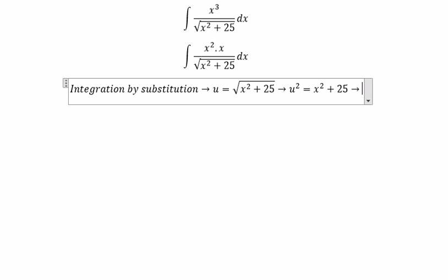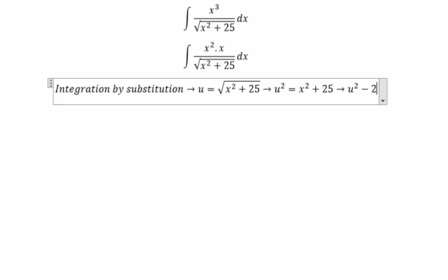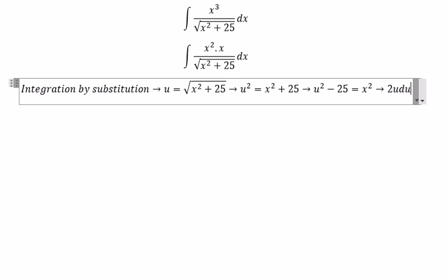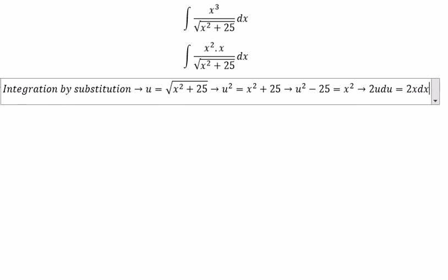Later, we do the derivative of this one. So we get about 2u du equals to 2x dx. Because we have a number 2 in here, so we divide both sides with number 2.